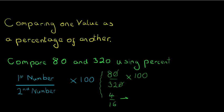I'm going to ignore the times 100 for a second and just keep working on this fraction. 4 over 16 halves to 2 over 8, and halves one more time to 1 over 4. Now you might actually recognize what this percentage is — 1 over 4, or a quarter — but on many occasions we won't recognize it, so let's complete it by putting back in the times 100.